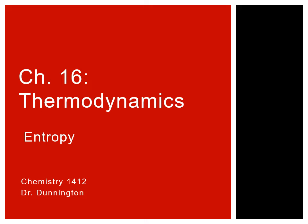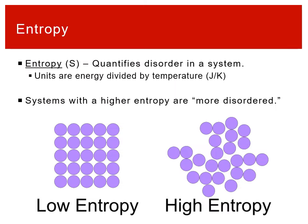We left off on a cliffhanger that we needed a new thermodynamic variable, so now we're going to introduce a new thermodynamic variable called entropy. Entropy has the symbol capital S, and the units associated with entropy are energy per temperature — so joules per kelvin. You can also get joules per kelvin per mole.